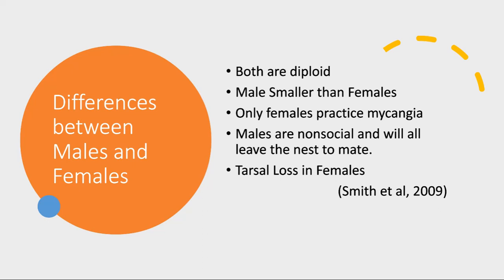The males and females of this species differ in several ways. First of all, the female is larger than the male. Males are non-social and will leave the nest to mate, while most of the females will remain in the nest as workers. Tarsal loss — that is, loss of their claws — occurs in females shortly after they reach maturity. This is thought to be due to wear and tear from crawling around in the tunnels, and it limits their mobility and prevents them from leaving the nest in the future.